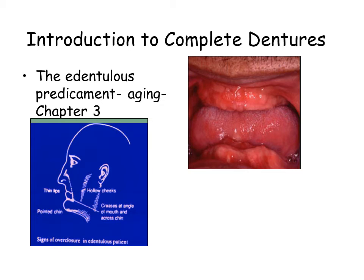Prosthodontic treatment for older people requires accurate diagnosis of systemic and local problems prior to the fabrication of the denture. The placement of a removable prosthesis produces profound changes in the oral tissues. Various conditions such as mucosal reactions, altered taste, gagging, and denture irritation may occur. It is important to have a recall system in place to monitor patients for these changes.